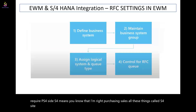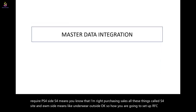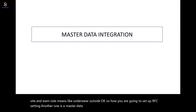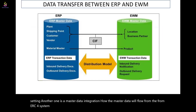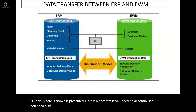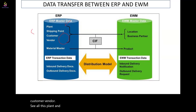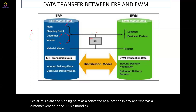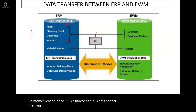How do we set up RFC settings? For master data integration, data flows from ERP or S4 system to the EWM system. In a decentralized setup — as shown here — a Core Interface (CIF) is required to transfer data. Plant and shipping point are converted as a location in EWM, while customer and vendor from ERP are moved as a business partner. To transfer this data in a decentralized system, the core interface is required.